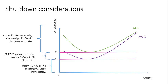To summarize the shutdown decision: above P2, if you exceed average total cost, you're making abnormal profit — stay in business and thrive. If you're between P1 and P2, you might be making a loss but covering variable costs — stay open in the short run, but close in the long run. If you're below P1, you're not even covering variable costs — close down immediately. That's the shutdown consideration.